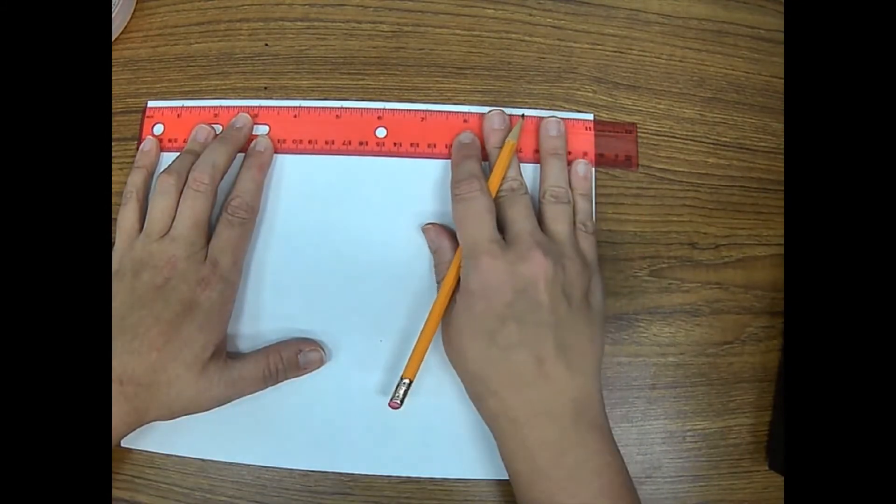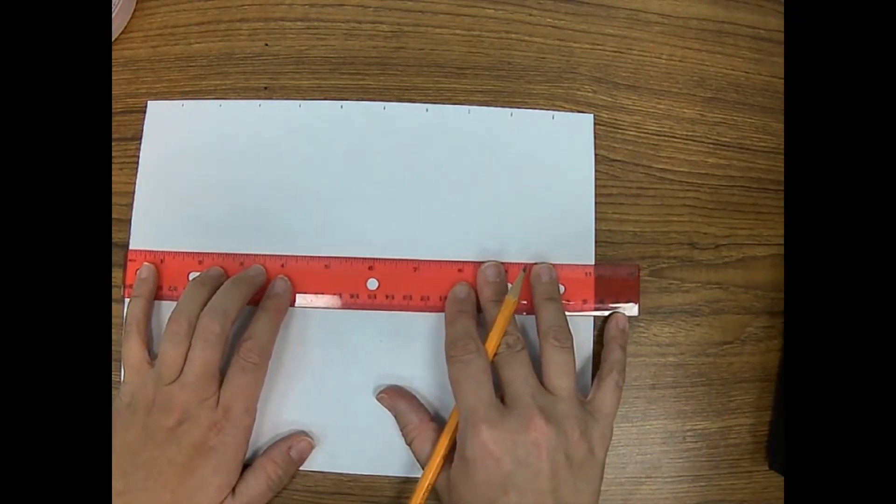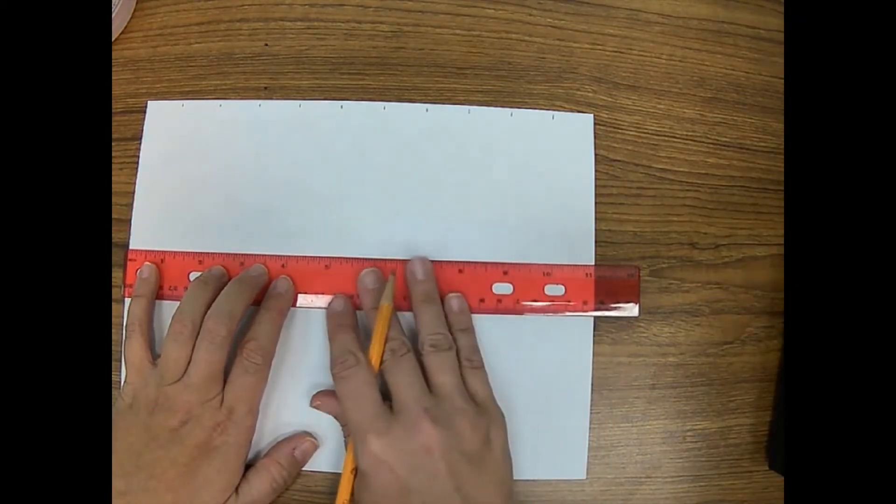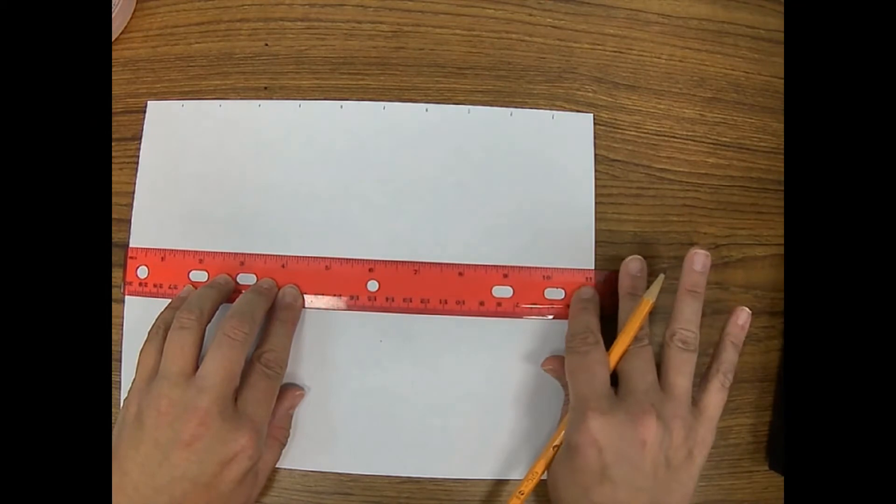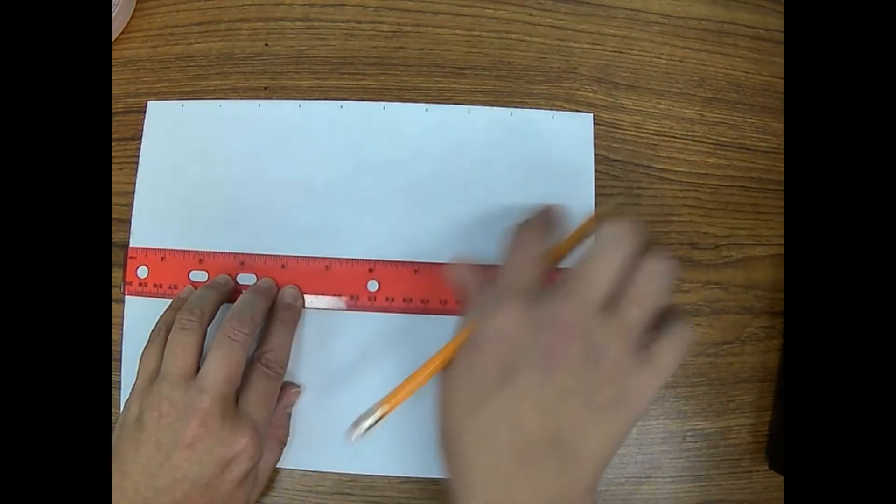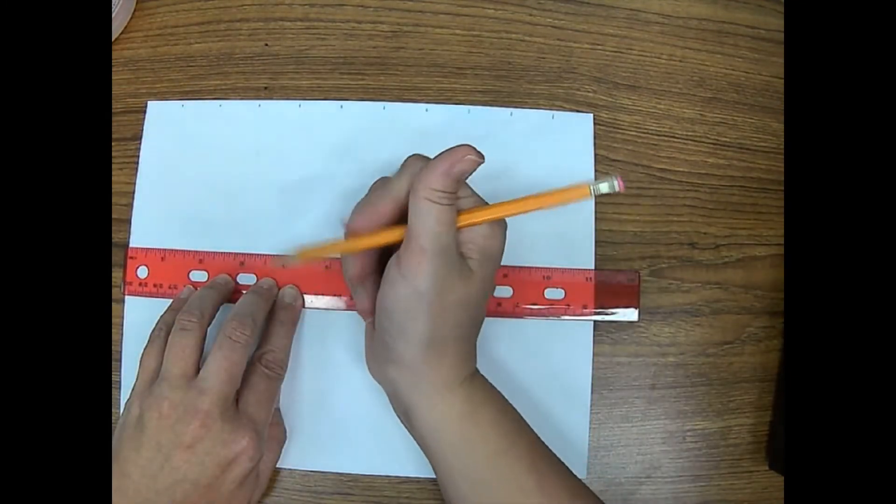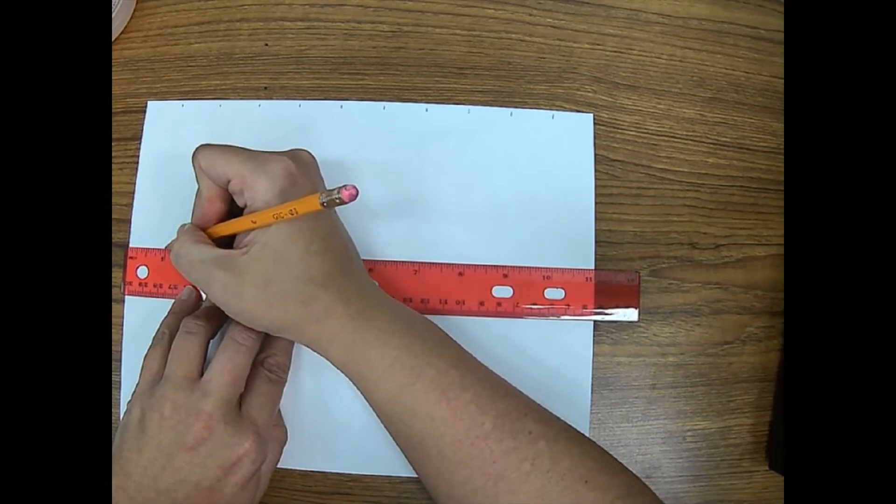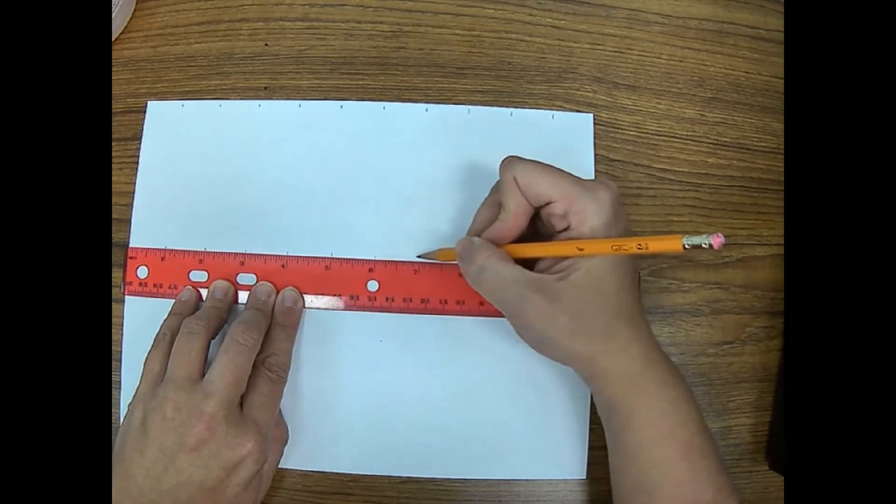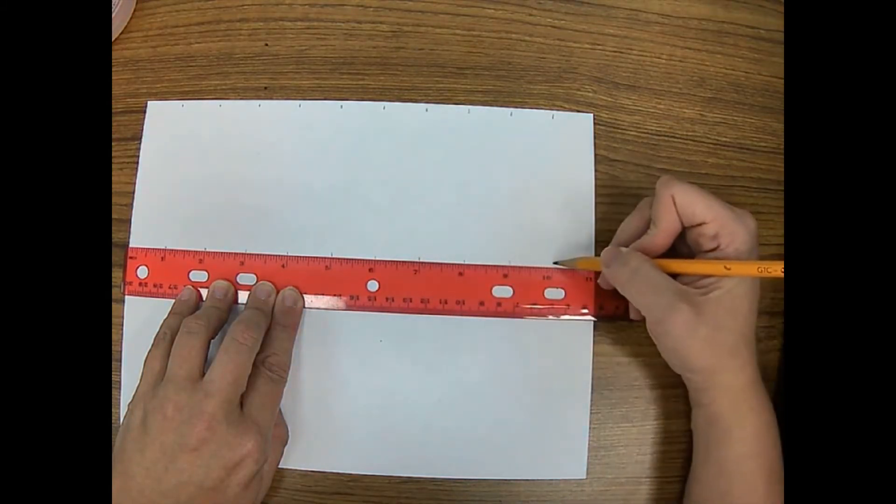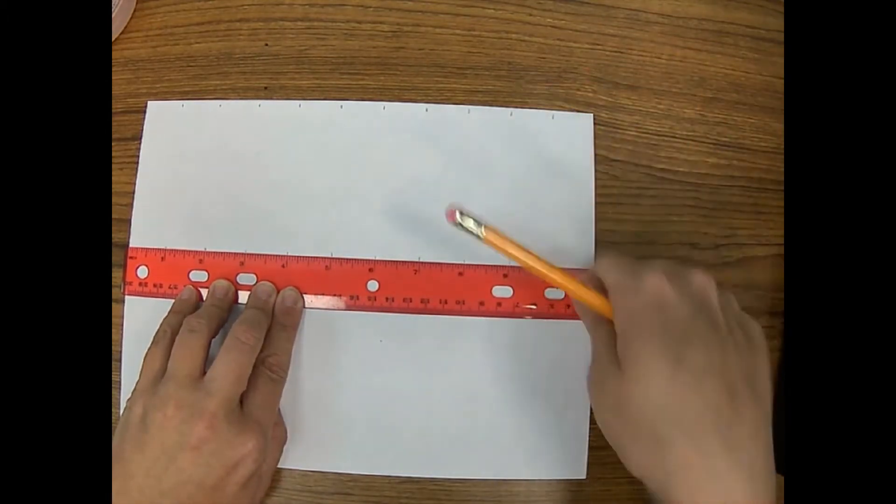Now I'm going to scrooch my ruler down to the middle of my paper. I'm going to line that up again. I'm going to line it up with my inch here and my 11 inch here. And the reason we don't flip it is because if there is any chance that we're off, then it would be slightly off and we wouldn't need a straight line. So I'm going to put a mark at every inch again.